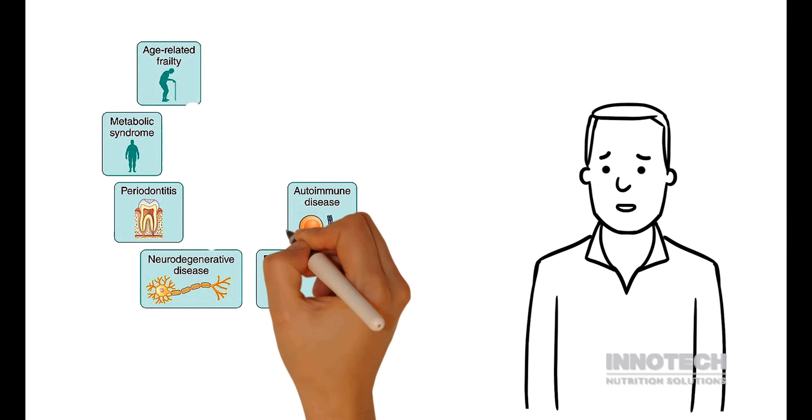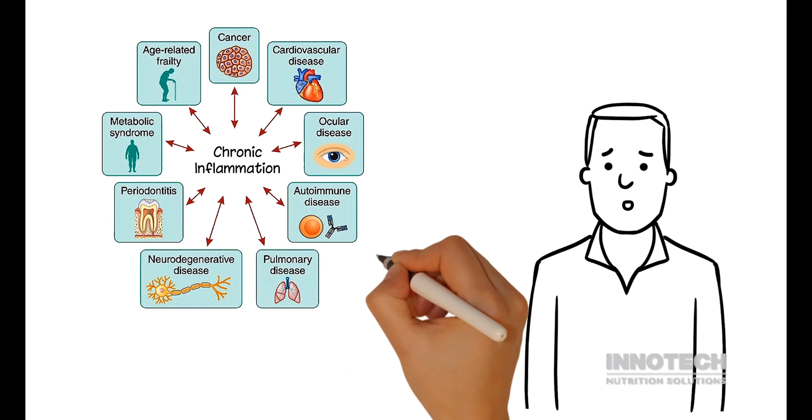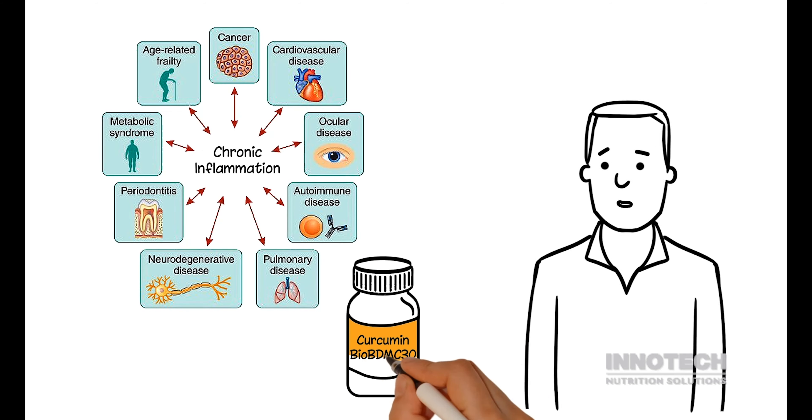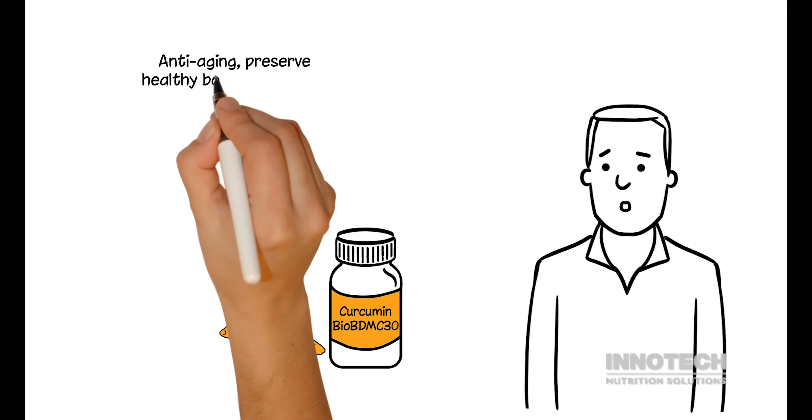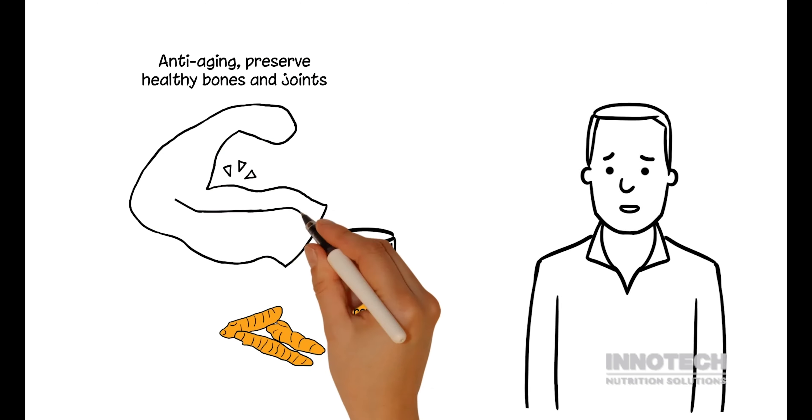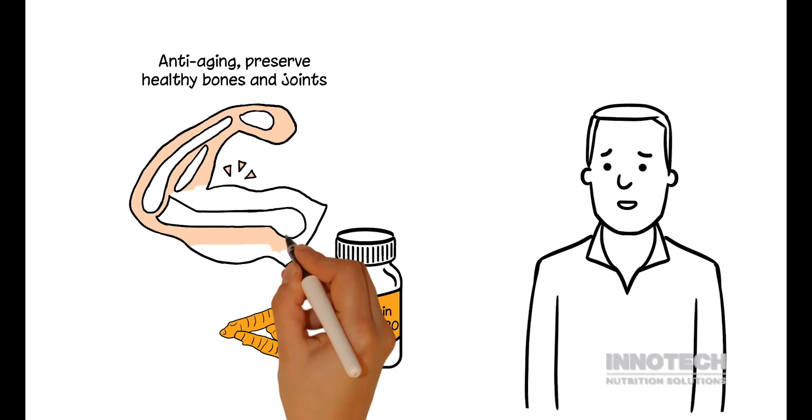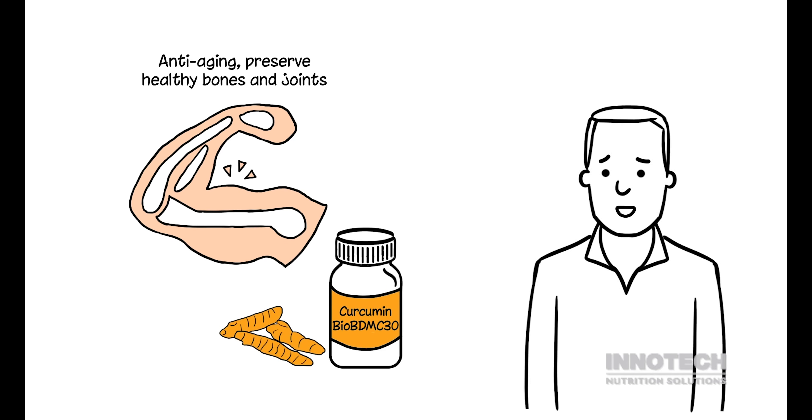Curcumin BDMC30 is ideal for relieving chronic inflammation, joint pain, as well as supporting immune system efficiency. It helps support anti-aging, preserve healthy bones and joints, and its effects take hours to feel instead of the days it can take regular curcumin to deliver results.